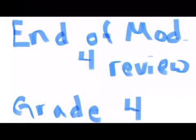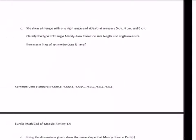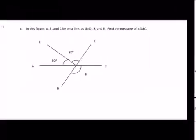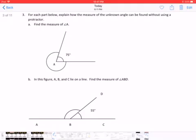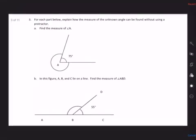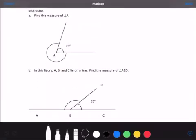End of Module 4 Review, Grade 4, Engage New York, Number 3. Number 3, for each part below, explain how the measure of the unknown angle can be found without using a protractor. A, find the measure of angle A.